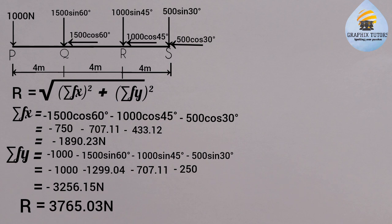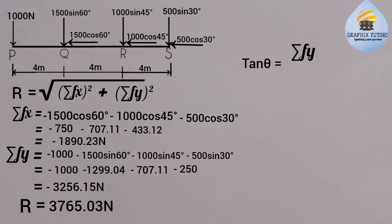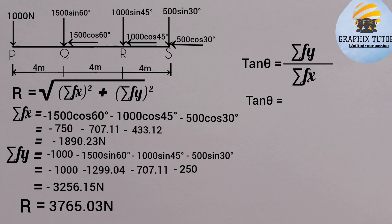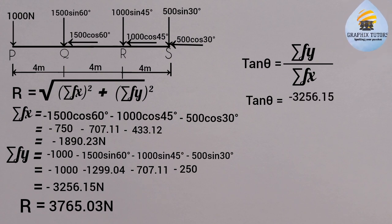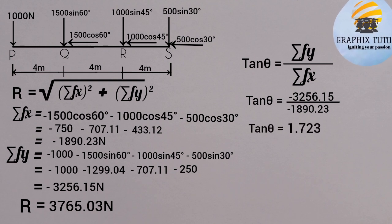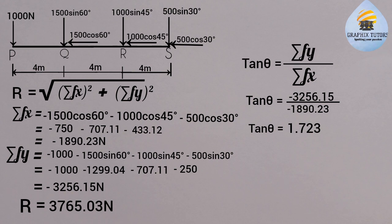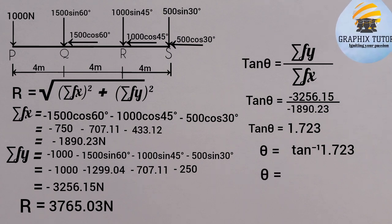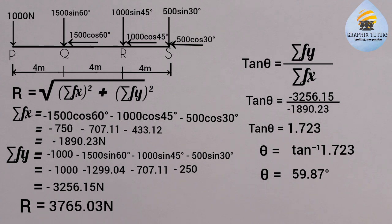For the direction, we use tan θ = ΣFy / ΣFx = 3256.15 / 1890.23 = 1.723. Therefore θ = tan⁻¹(1.723) = 59.87°. So the resultant force has a magnitude of 3765.03 N acting at an angle of 59.87° to the horizontal.